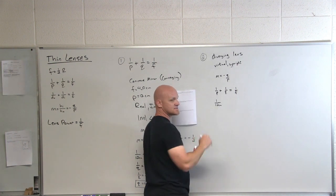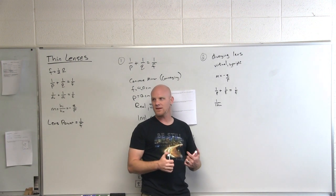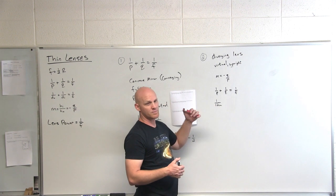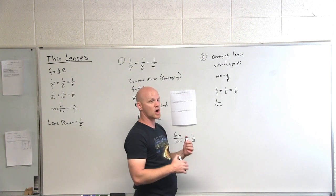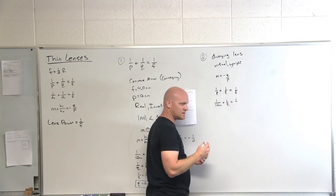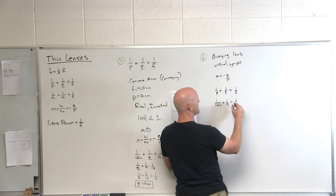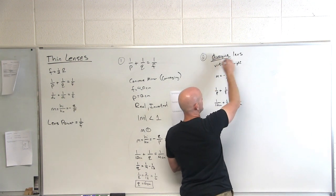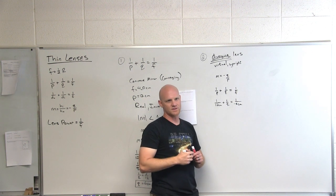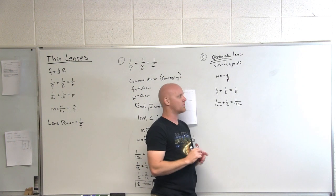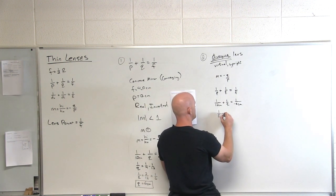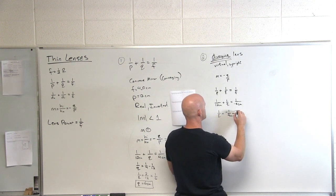Your object distance is always a positive number when dealing with a single lens or mirror. So: 1/12 + 1/Q = 1/f. The radius of curvature is 8 centimeters, so the focal distance is 4 centimeters — but it's a diverging lens, so the focal distance is always negative. Big common mistake: the focal distance is negative four centimeters in the equation, not positive four.